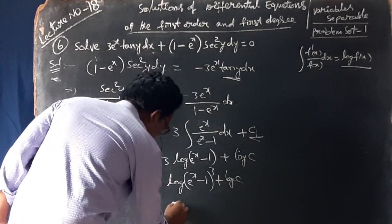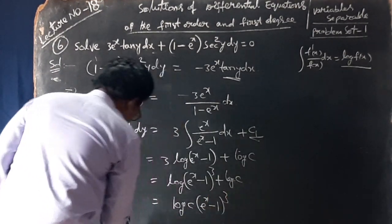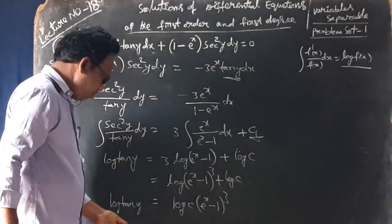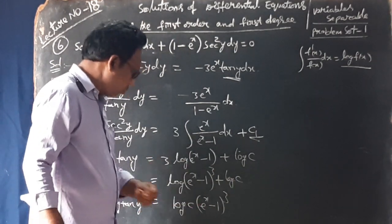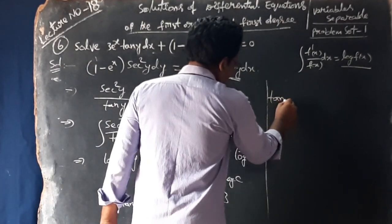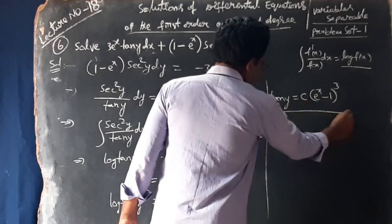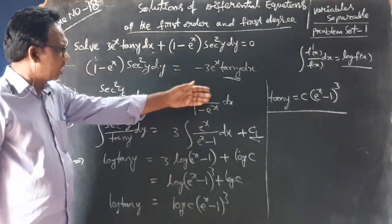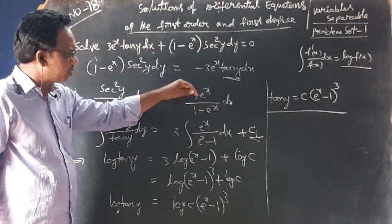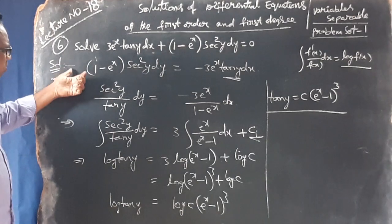So c1 equals log of e power x minus 1 whole cube plus log c, which gives log c into e power x minus 1 whole cube. Therefore, log tan y equals log c into e power x minus 1 whole cube, which means tan y equals c into e power x minus 1 whole cube. This is the solution. Next is sum number 7.